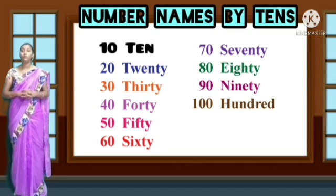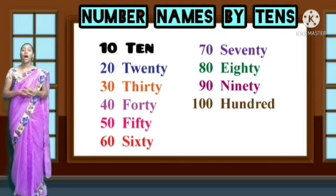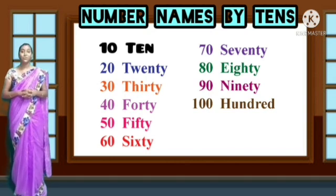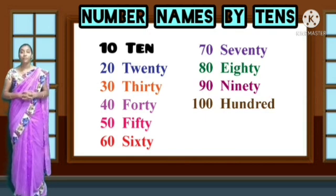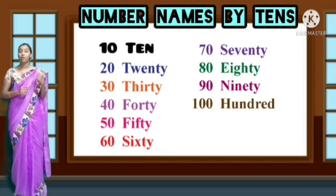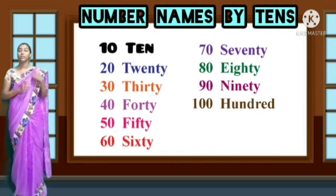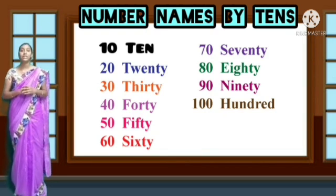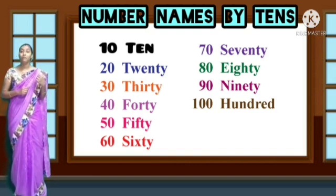Then 40 — four, zero, forty. F-O-R-T-Y, forty. And 50 — five, zero, fifty. F-I-F-T-Y, fifty. Be careful when writing the spelling: for forty, write F-O-R-T-Y — don't write F-O-U-R-T-Y. For fifty, the spelling is F-I-F-T-Y — not F-I-B-E-T-Y.